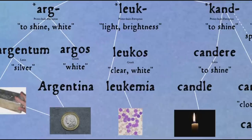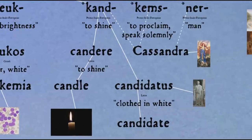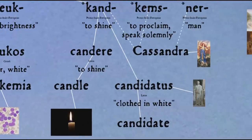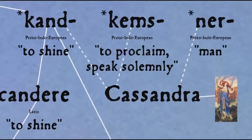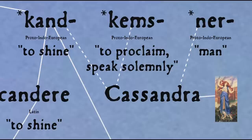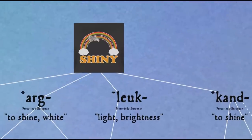The root 'kand', passing through Latin, gives us not only 'candle' and 'incandescent', but also 'candidate', because a Roman running for political office would wear an extra white toga — from Latin 'candidatus', clothed in white — and may also be partly behind the name Cassandra, the daughter of King Priam who prophesied the fall of Troy, though she was cursed to have no one believe her prophecies. As for the word 'white', it comes from another shiny root, 'kweit'. The other main English word from this root is 'wheat', with its white flour.